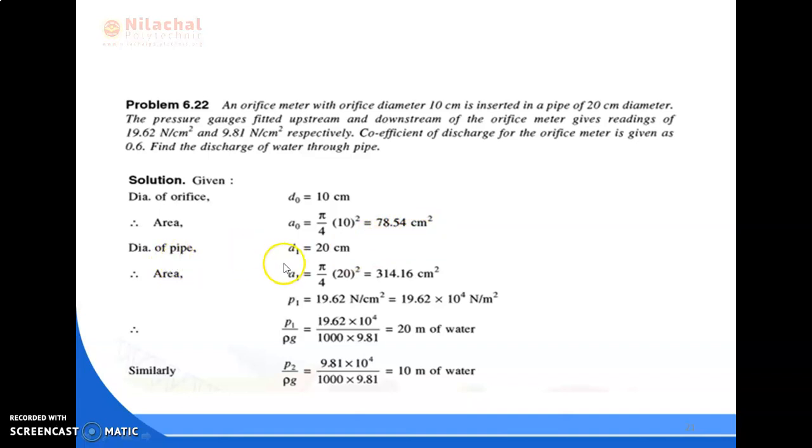Similarly, diameter of pipe D₁ = 20 cm, A₁ = π/4 × D₁² = 314.16 cm². P₁ is given pressure, this is 19.62 N/cm². We convert it into meter, so that's 19.62 × 10⁴ N/m². If we calculate the pressure energy P₁/ρg, multiplying by 1000 × 9.81, this is 20 meter of water.